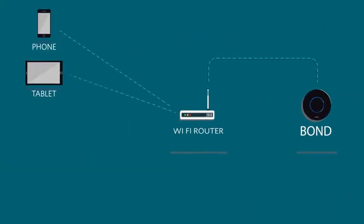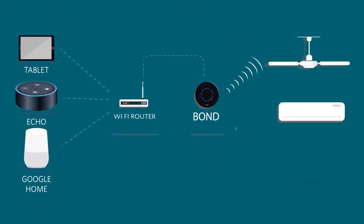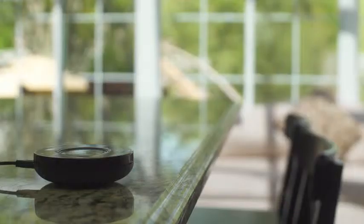So using your phone, tablet, Amazon Echo, Google Home, whatever you want, you control the Bond, the Bond controls your appliances, and you'll never need your old remotes again.